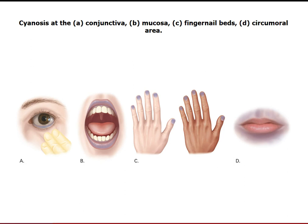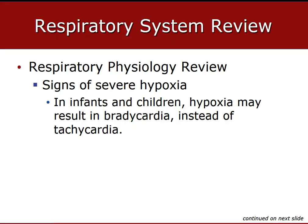Signs of cyanosis include conjunctival cyanosis — pull the eyelids down and you'll see it there — cyanosis to the mucosa including the lips, gums, and tongue, fingernail bed cyanosis, and circumoral cyanosis which is around the mouth.